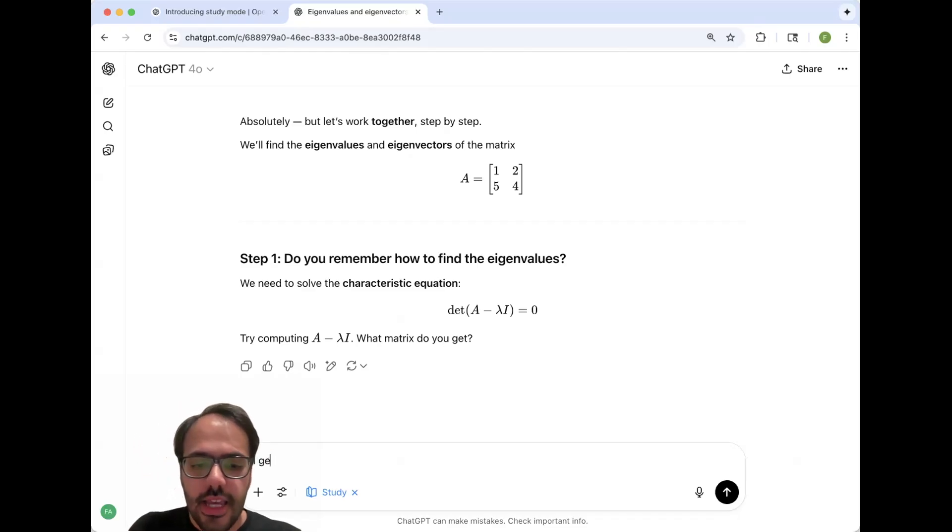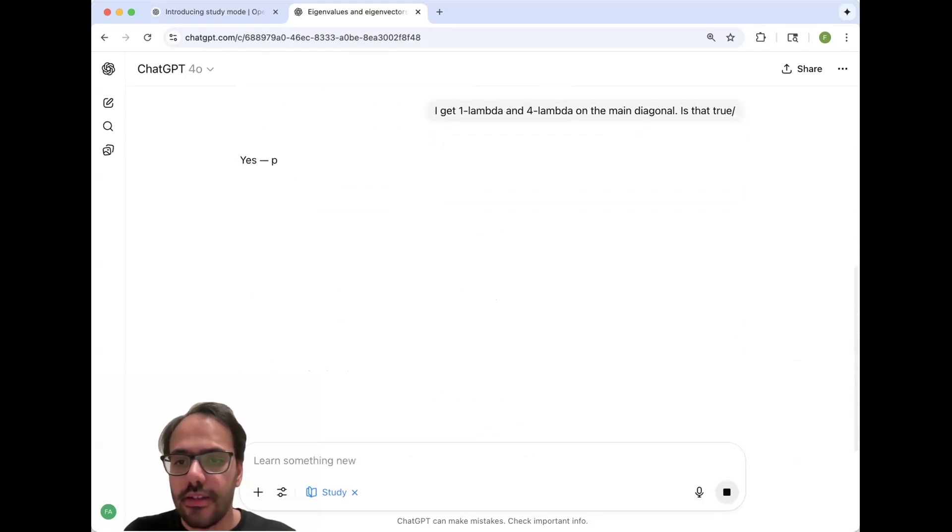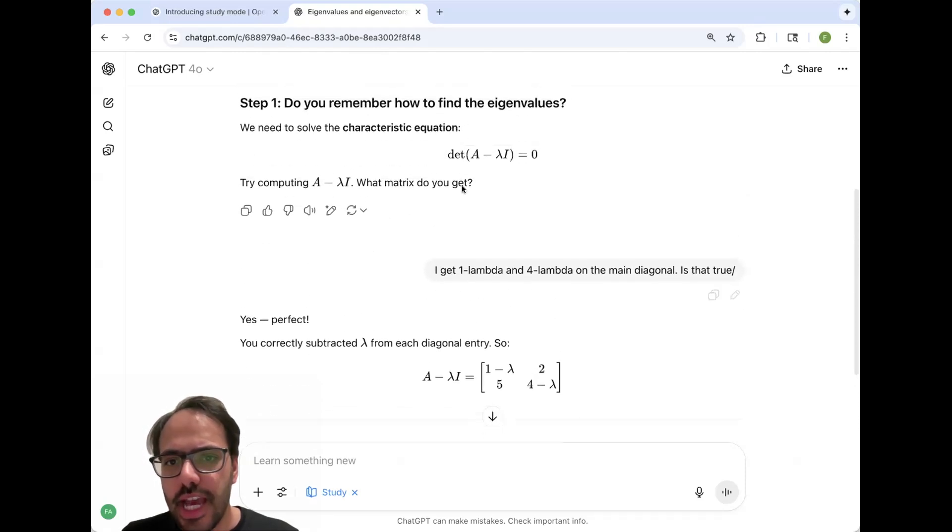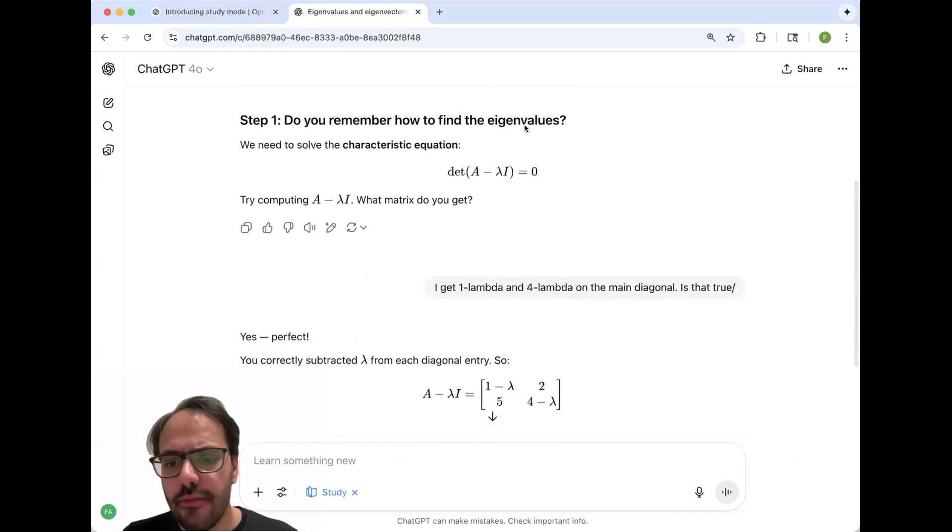So I get one minus lambda and four minus lambda on the main diagonal. Let's see if this is correct or not. Yes, perfect. So you can see that I correctly answered this by subtracting lambda from each diagonal entry. So since we have here one, two, five, four, now we have one minus lambda, four minus lambda, and then we don't touch these off diagonal terms.